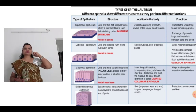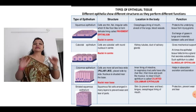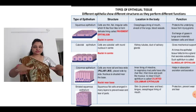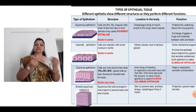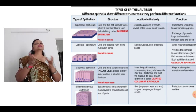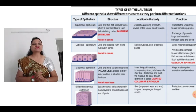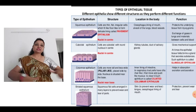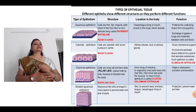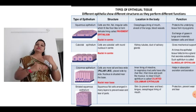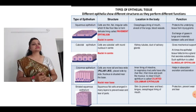Now the characteristics of these types: structure, location and function. The squamous epithelium — the cells are very thin, flat and irregular. Its location is the esophagus, lining of mouth, alveoli of lungs and blood vessels. The nucleus is in the center. It is also called pavement epithelium because it forms a delicate lining like a floor. Its function is it protects the underlying tissue from injury, and facilitates exchange of gases in the lungs and exchange of materials between cells and blood.